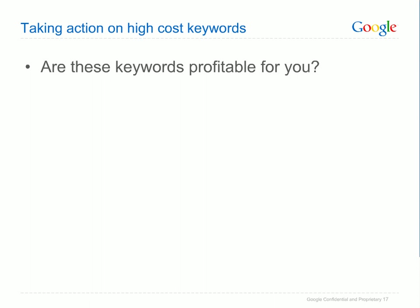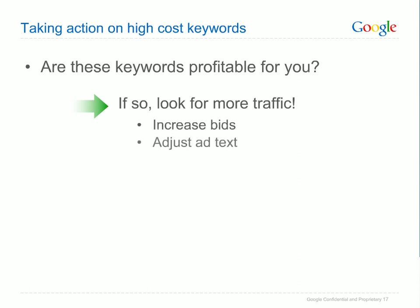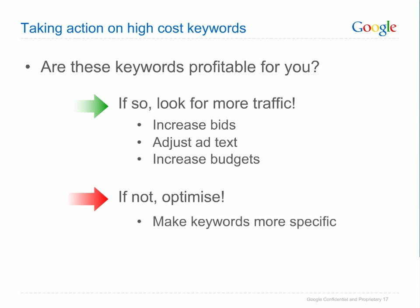If you've found your big spenders, you can take action. The first question to ask is: are these keywords profitable? You can easily answer this if you've set up AdWords conversion tracking and are measuring your cost per conversion. If a high-spending keyword is profitable, you may wish to increase the number of visitors it's bringing to your site — strategies include raising your bids, optimising your ad text, or increasing your daily budget. If a high-spending keyword isn't producing good results, you should look to optimise. Is the keyword too general? You can make it more specific or optimise the ad text to make sure users are seeing a message relevant to what they're searching for. Finally, if your keyword is relevant but not profitable, consider lowering your bid to better achieve your desired profit margin.